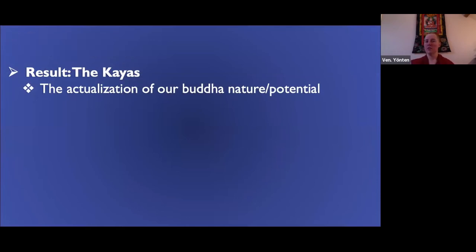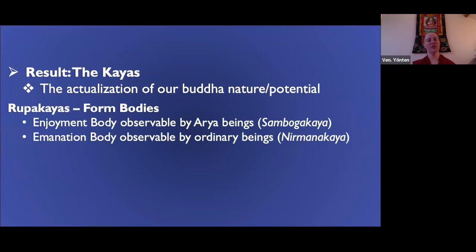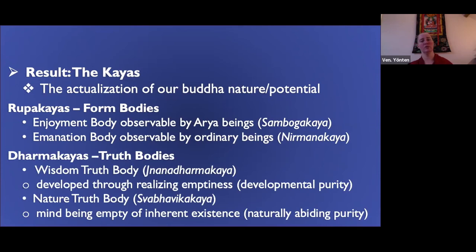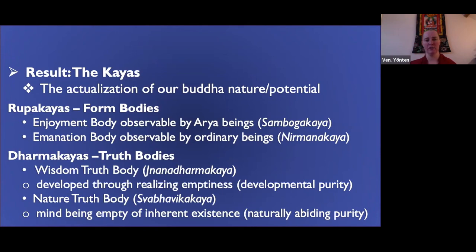The result is the actualization of our buddha nature or buddha potential. The form bodies are broken down into the enjoyment body — observable by arya beings who have realized emptiness — and the emanation body, observable by ordinary beings like us. The dharmakaya is divided into the wisdom truth body, developed through realizing emptiness (the adventitious or developmental purity), and the nature truth body, which is the mind being empty of inherent existence — the naturally abiding purity, there by itself, which comes into fruition when the others have been developed.